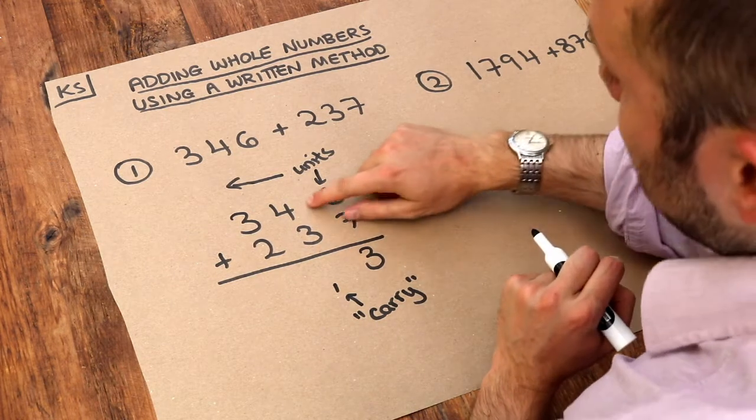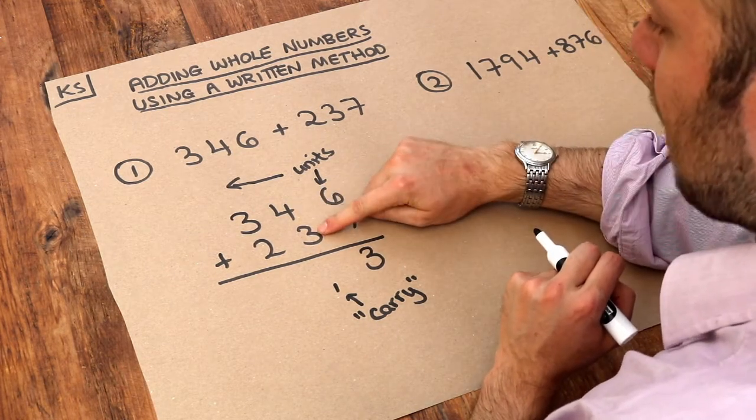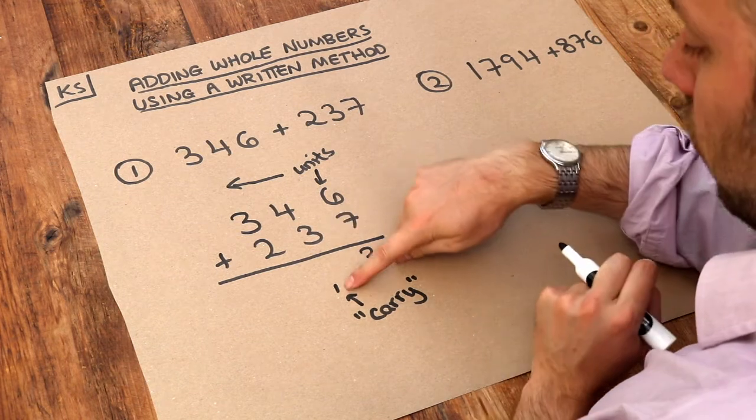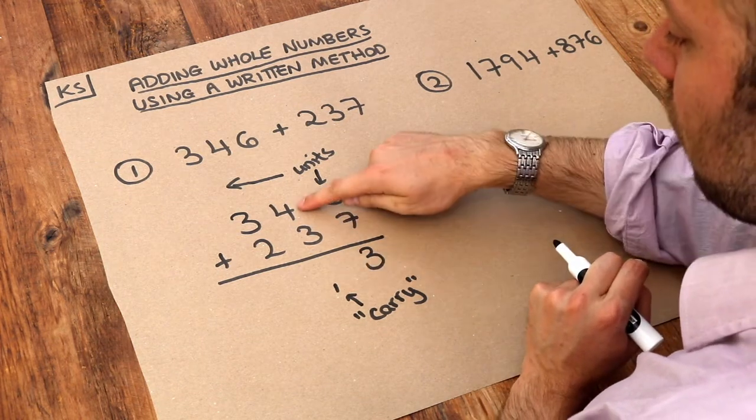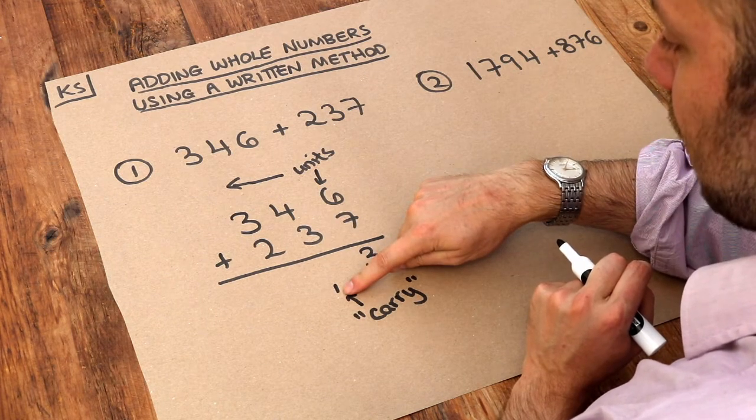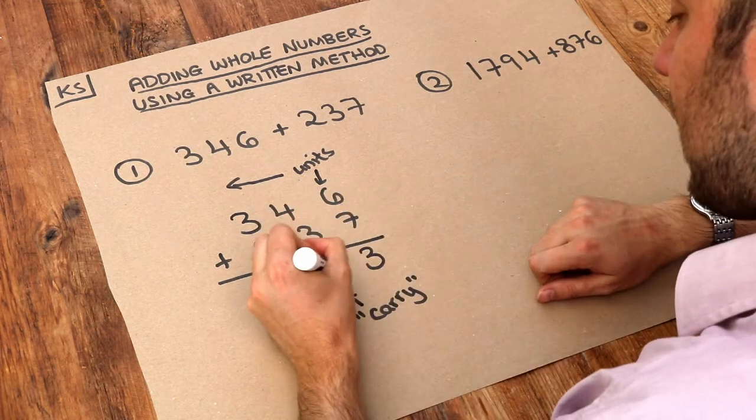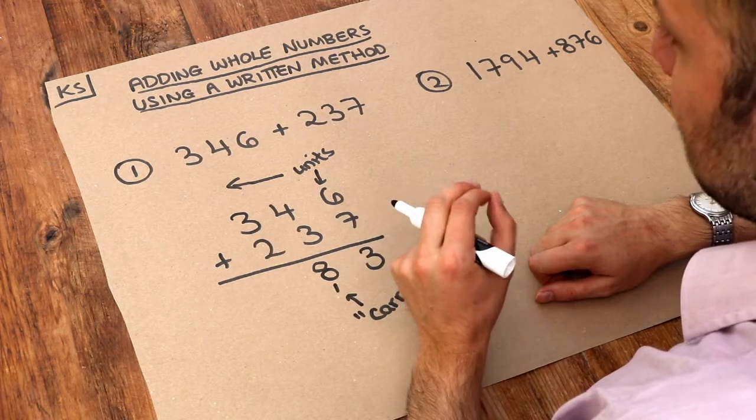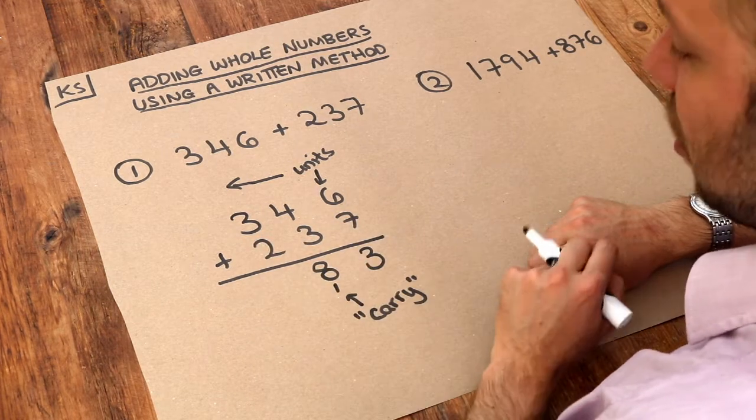We now work on the next column. So we've got 4 plus 3 is 7, but we add on whatever carry you have. So 4 plus 3 is 7, plus the extra 1 as the carry is 8. So we put 8 here. And there's no carry this time because 8 is just a single digit number.